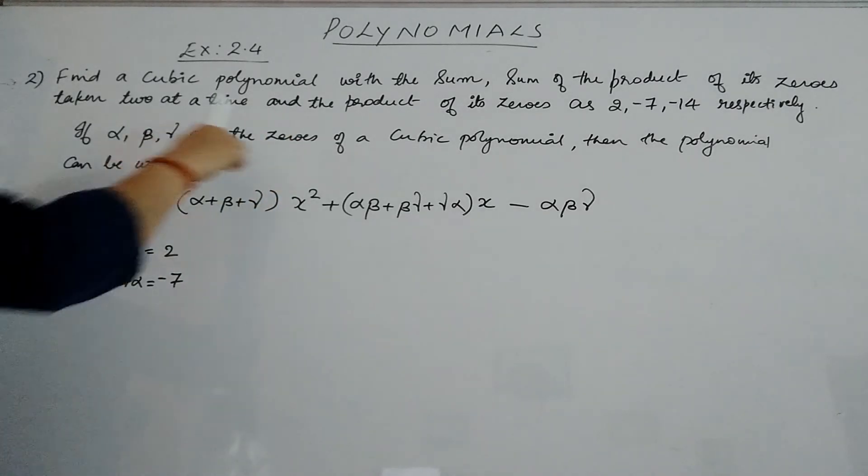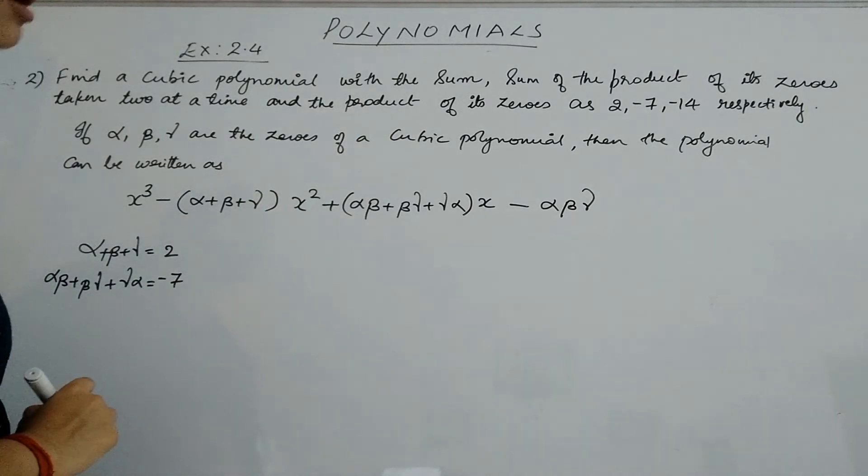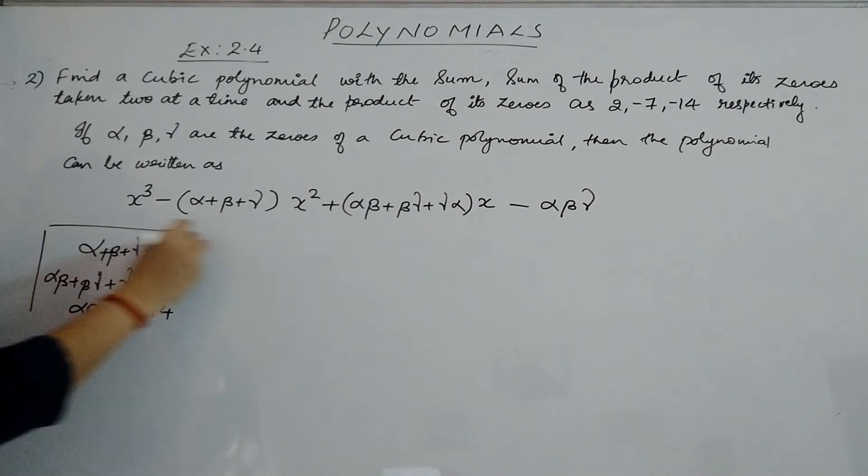The last thing they have given is the product of its zeros as -14. That means αβγ = -14. These three things are given.